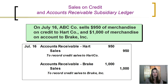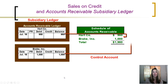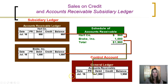To record these sales, we would debit accounts receivable and credit sales. Both of those are going to go into the general ledger, which is what we call the controlling account, and the total amount of receivables in the general ledger will be $1,950. In the subsidiary ledger, we are keeping track of who owes the company that $1,950 — $950 of it is a receivable from customer Hart, and $1,000 is a receivable from customer Break.